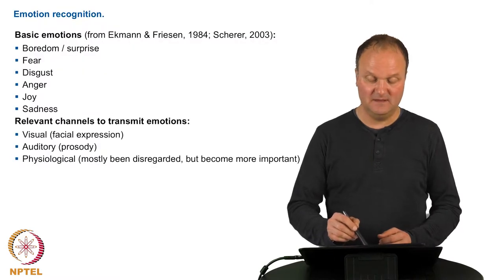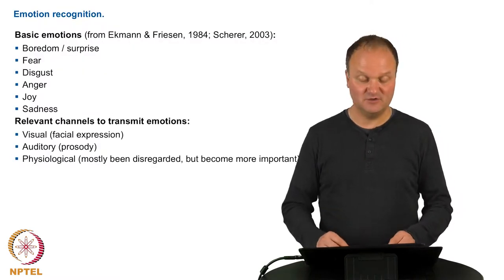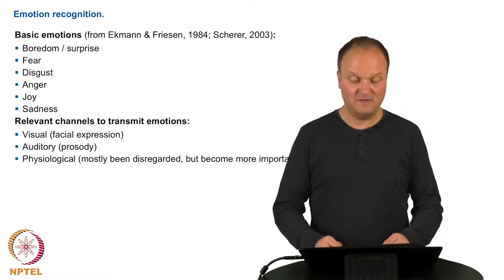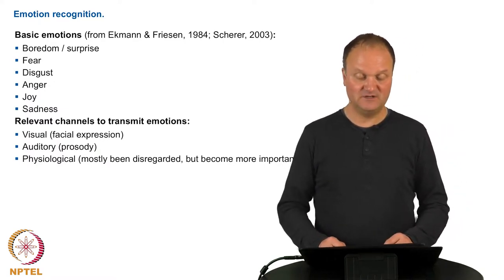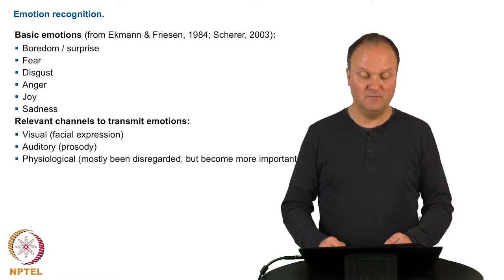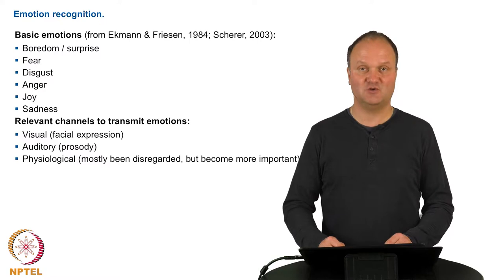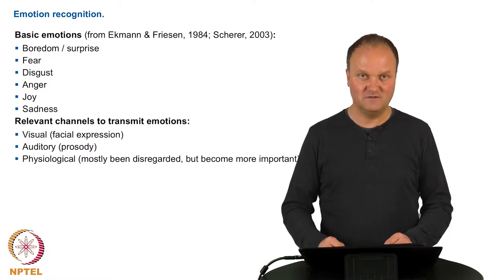There exist several classifications of emotions. The most basic one is the one from Ekman, Friesen, and Scherer, which differentiate between boredom, surprise, fear, disgust, anger, joy, and sadness as basic emotions which humans are able to show.